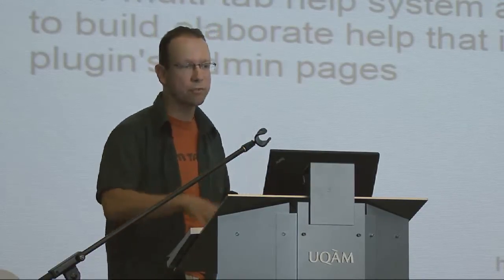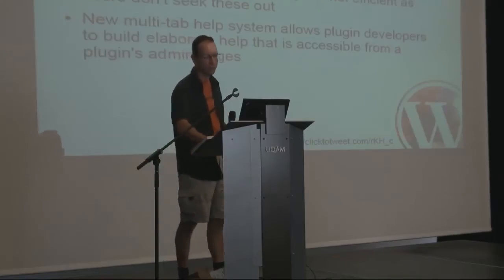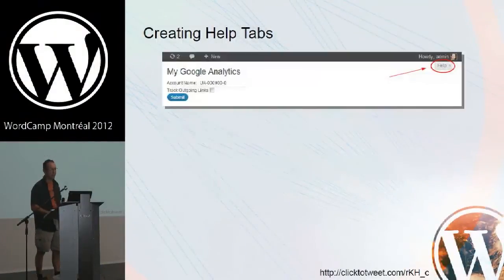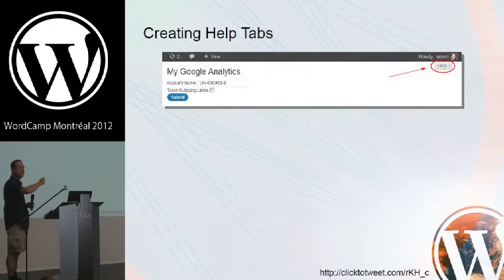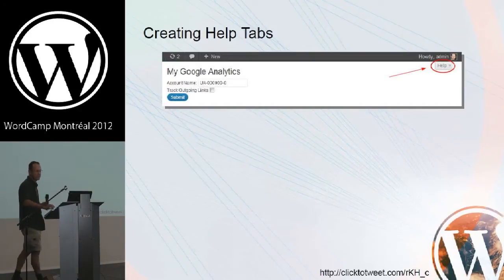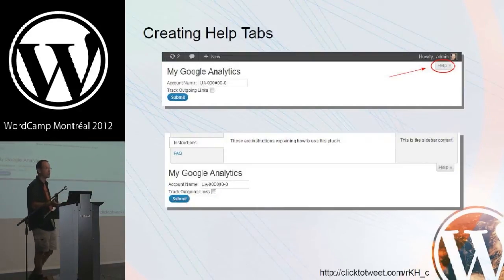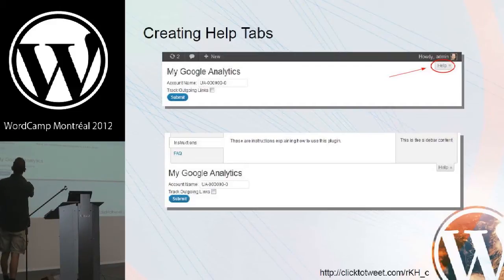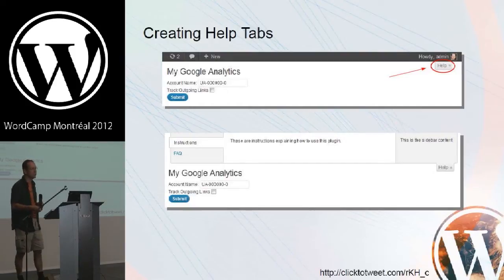This has been improved in version 3.3 and on — 3.3 and 3.4 — where you can actually create multi-tab help inside of the interface. Whenever you're creating a plugin with an admin page, it's very easy to go in there and add your own help. That little help tab on the far top right corner — users are already familiar with it throughout the rest of the interface. You can create, for example, an instructions tab and an FAQ tab, and the user can page through different sections to see all the information packaged with your plugin.